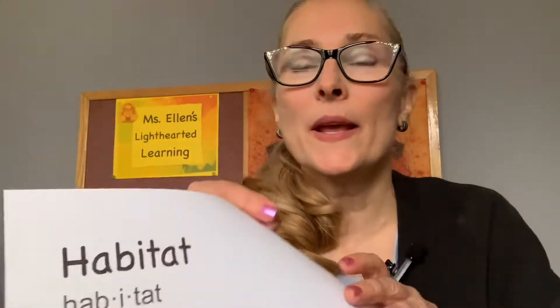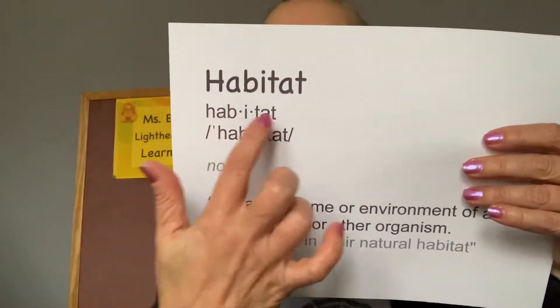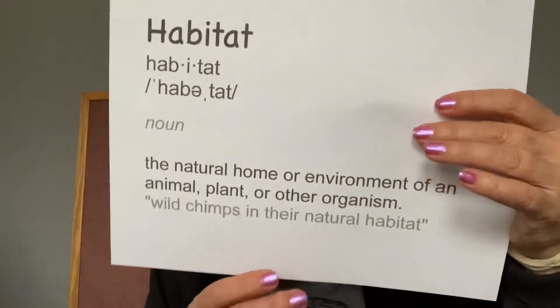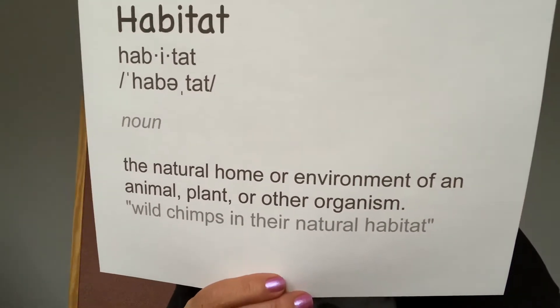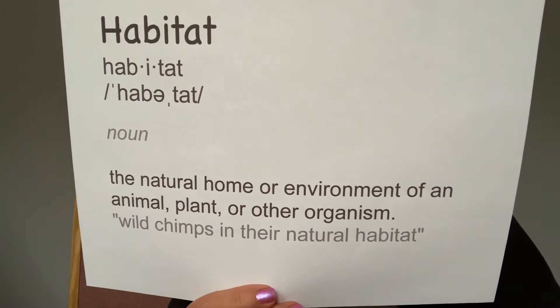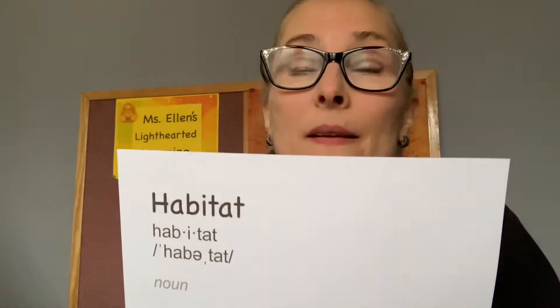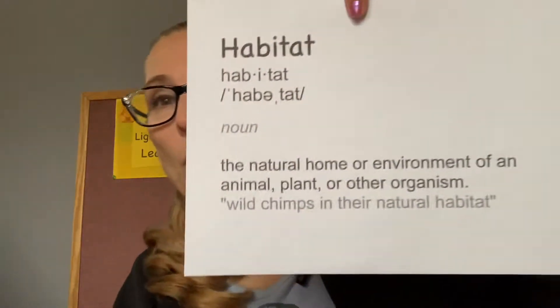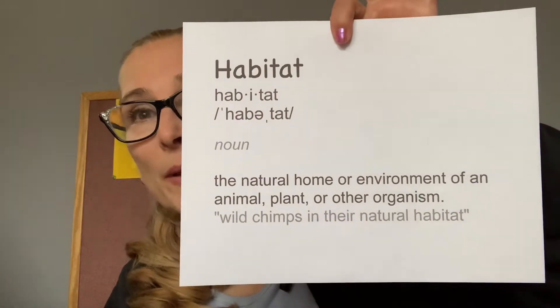So we need to know what a habitat is. Habitat is a three-syllable noun, and it's a natural home or environment of an animal, plant, or other organism. It's basically their home, where they live. So it could be something like a desert or an ocean — where the animal or plant would be found.